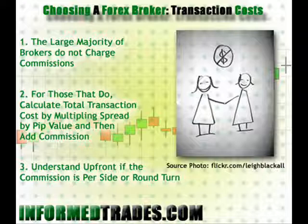The large majority of brokers do not charge a commission. However, when analyzing those that do, most traders will add the spread for the currency pair that they are trading to the commission in order to calculate the total transaction costs for the trade. The important thing to keep in mind is that while commissions are normally fixed, the pip value for each currency pair varies depending on current market rates and whether or not the US dollar is the second currency in the pair. As an example, the current pip value when trading on a standard account for dollar-yen is $9.25, and the current spread with the broker I'm looking at is 2.5 pips. So if this broker were to charge a $10 commission on top of this, then my total transaction cost would be $9.25 times 2.5 plus $10, or $33.13.